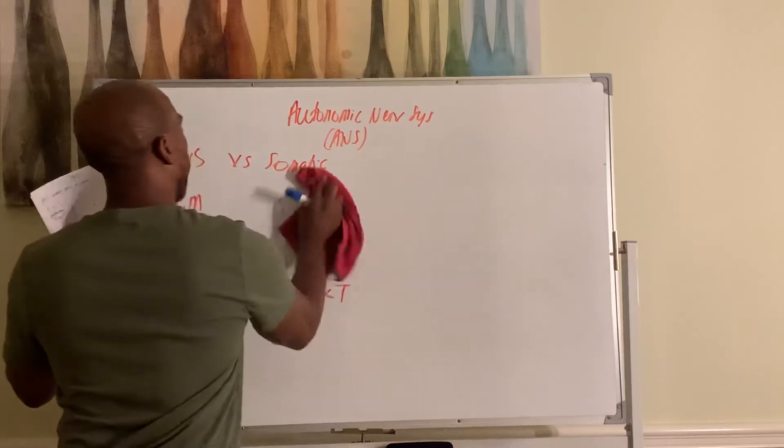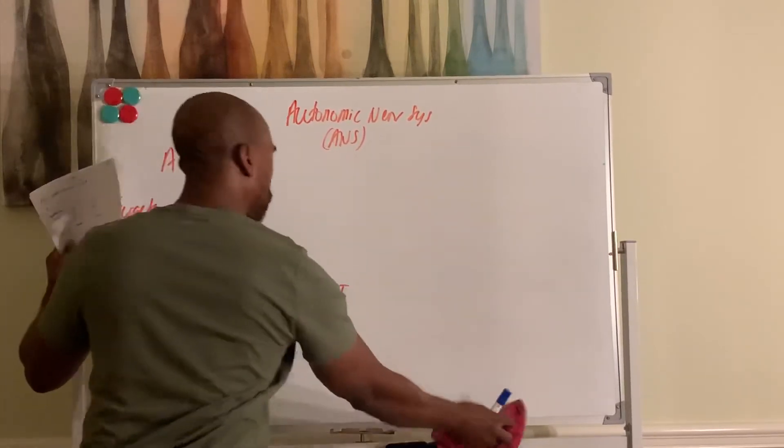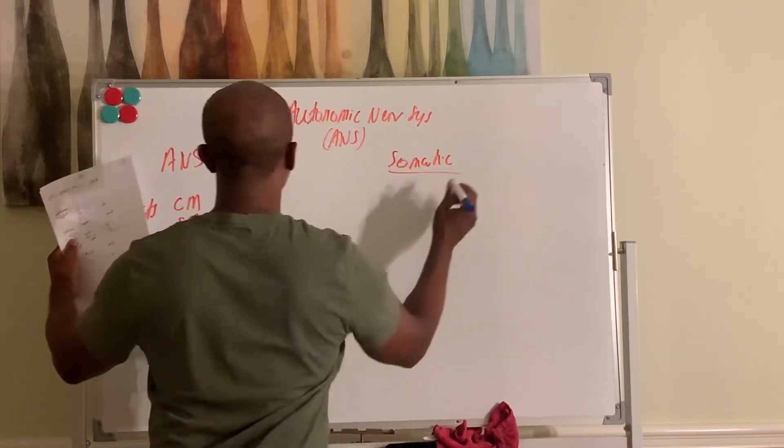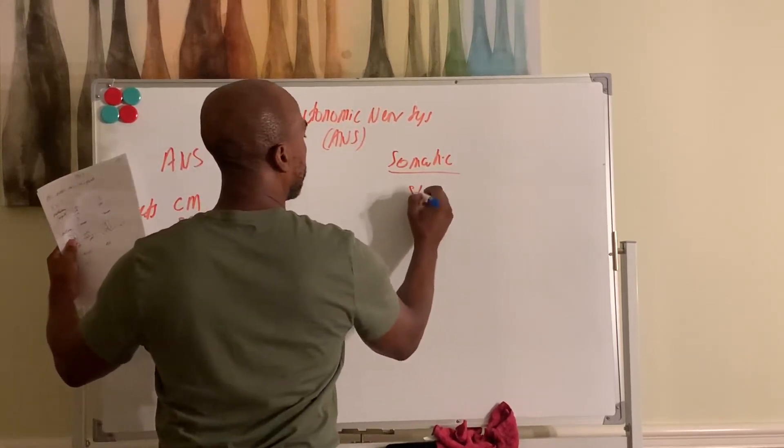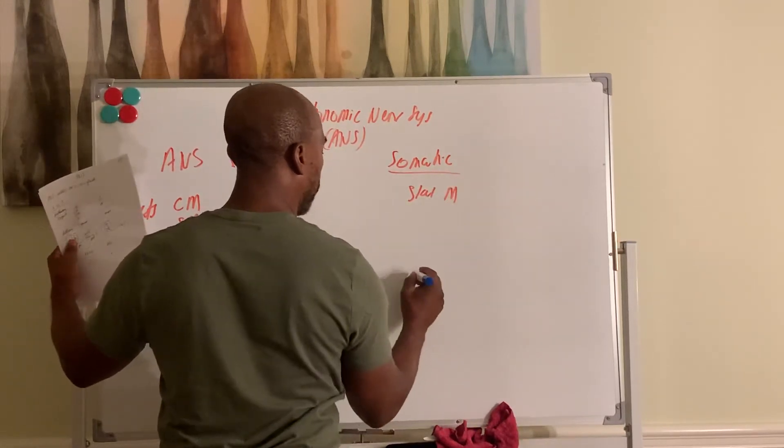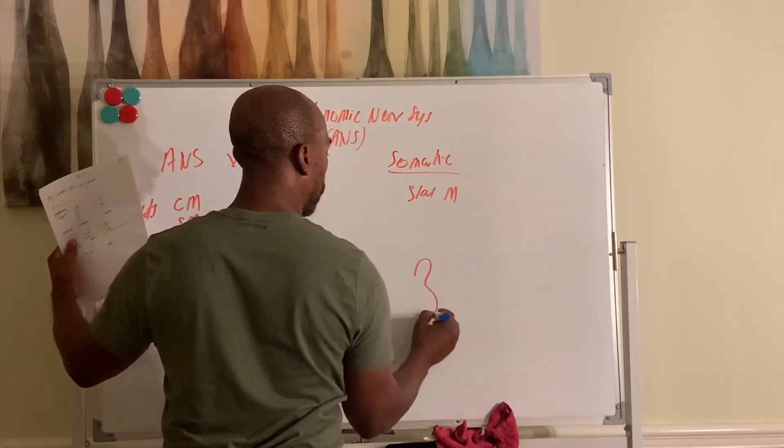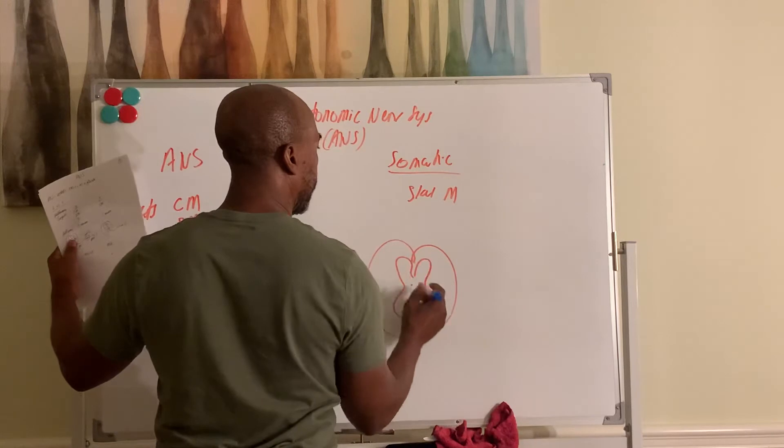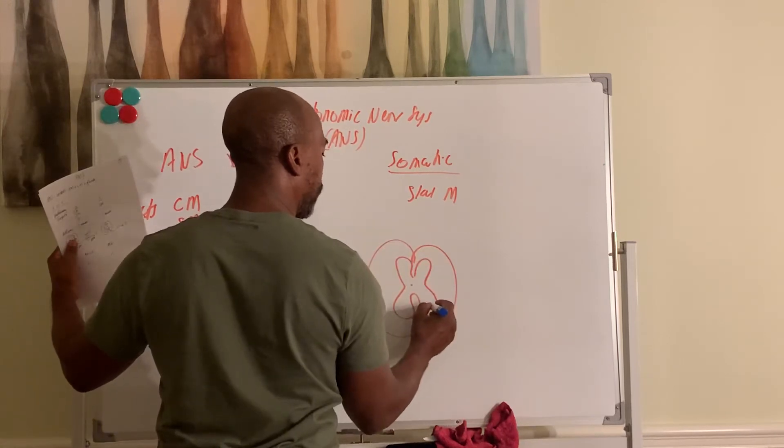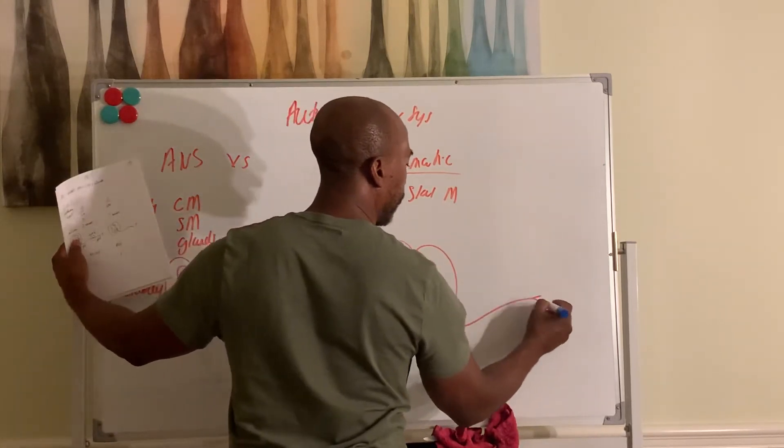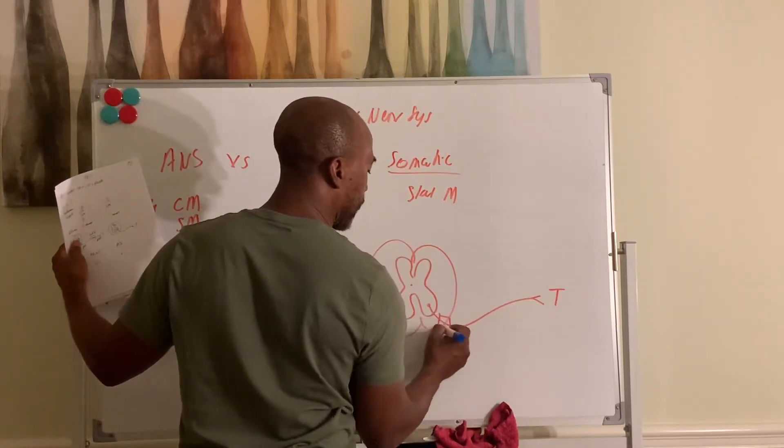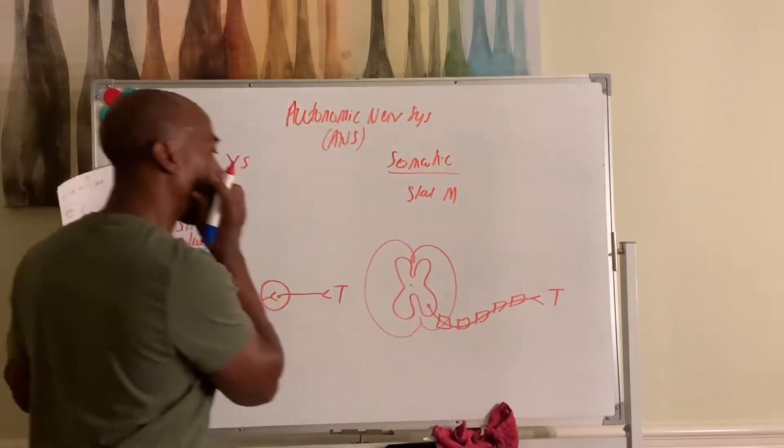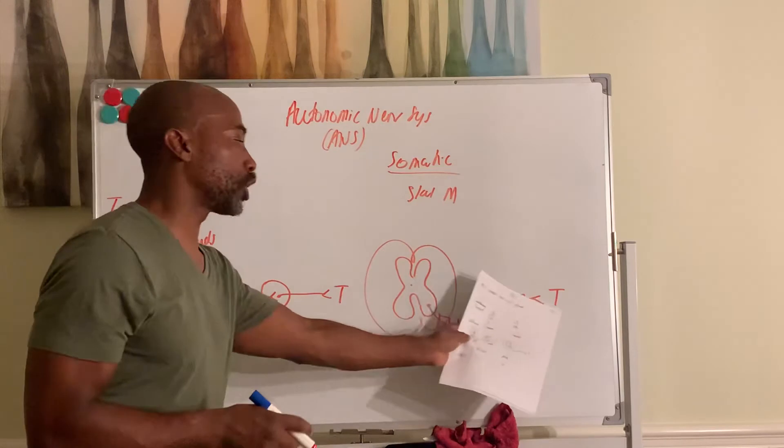So the ANS uses a two neuron pathway, while the somatic nervous system uses a single neuron pathway. So here, you have the spinal cord, and then the dorsal horn, ventral horn, like so. And then here, they lead from the ventral horn to the ventral root, and go straight out to the target. So these are, of course, myelinated.